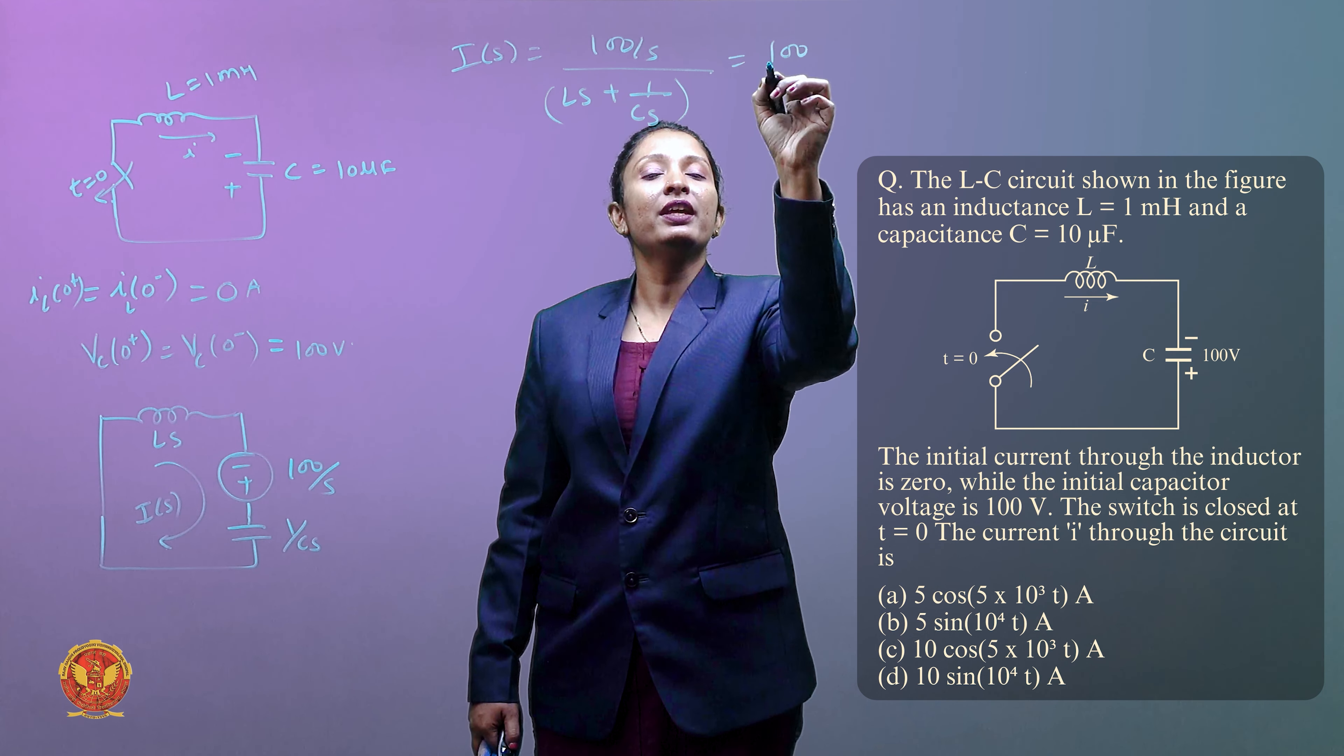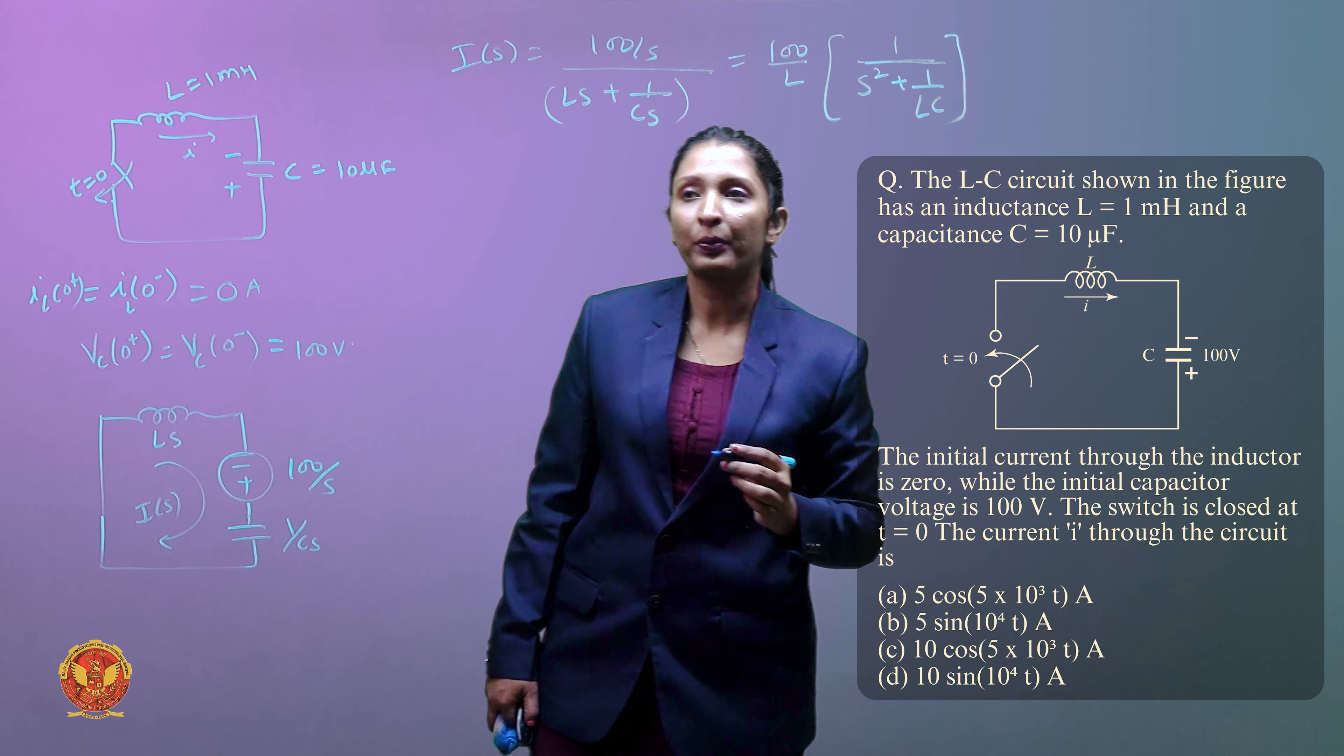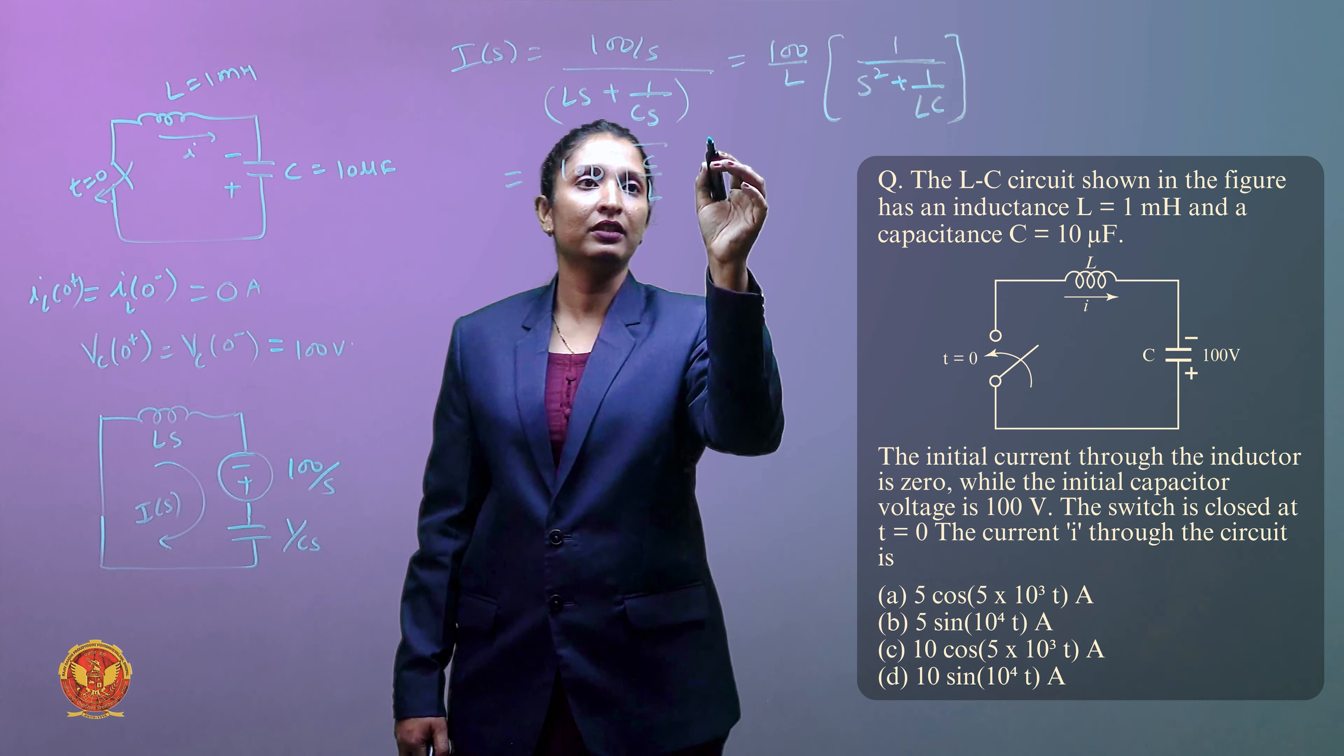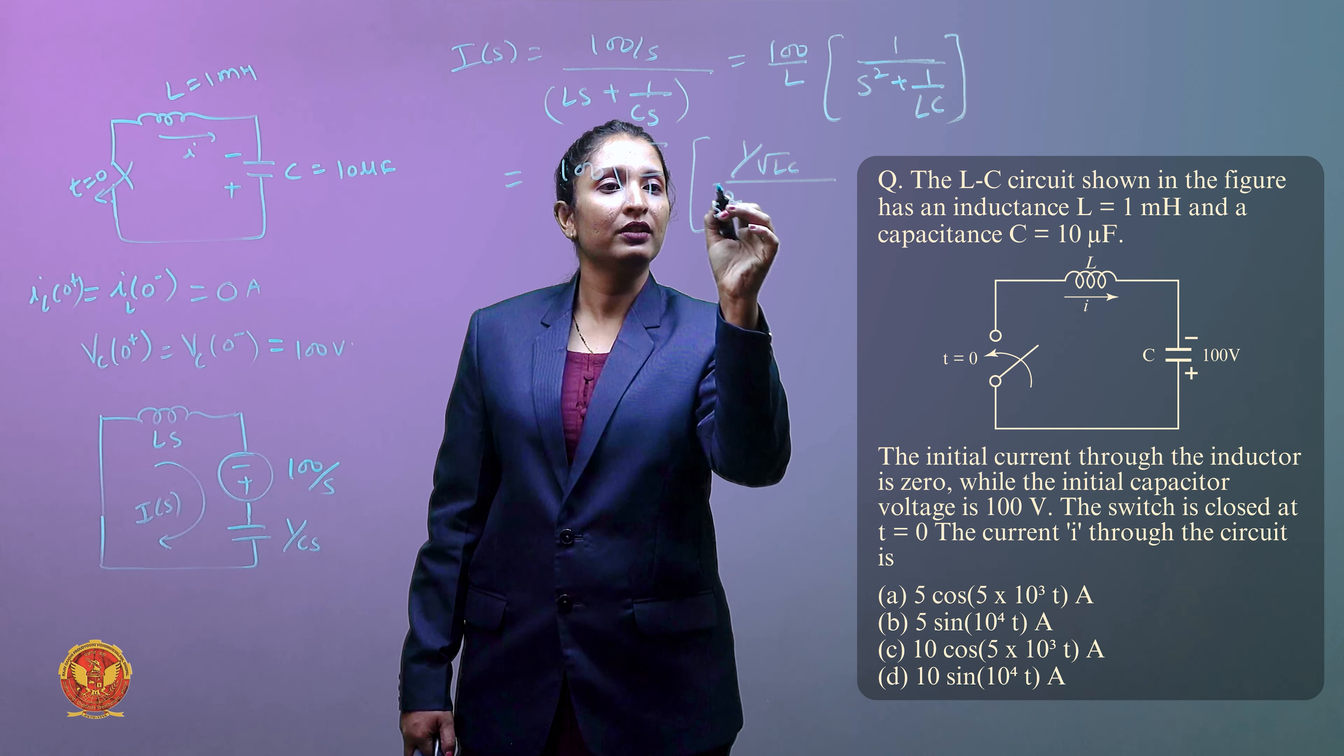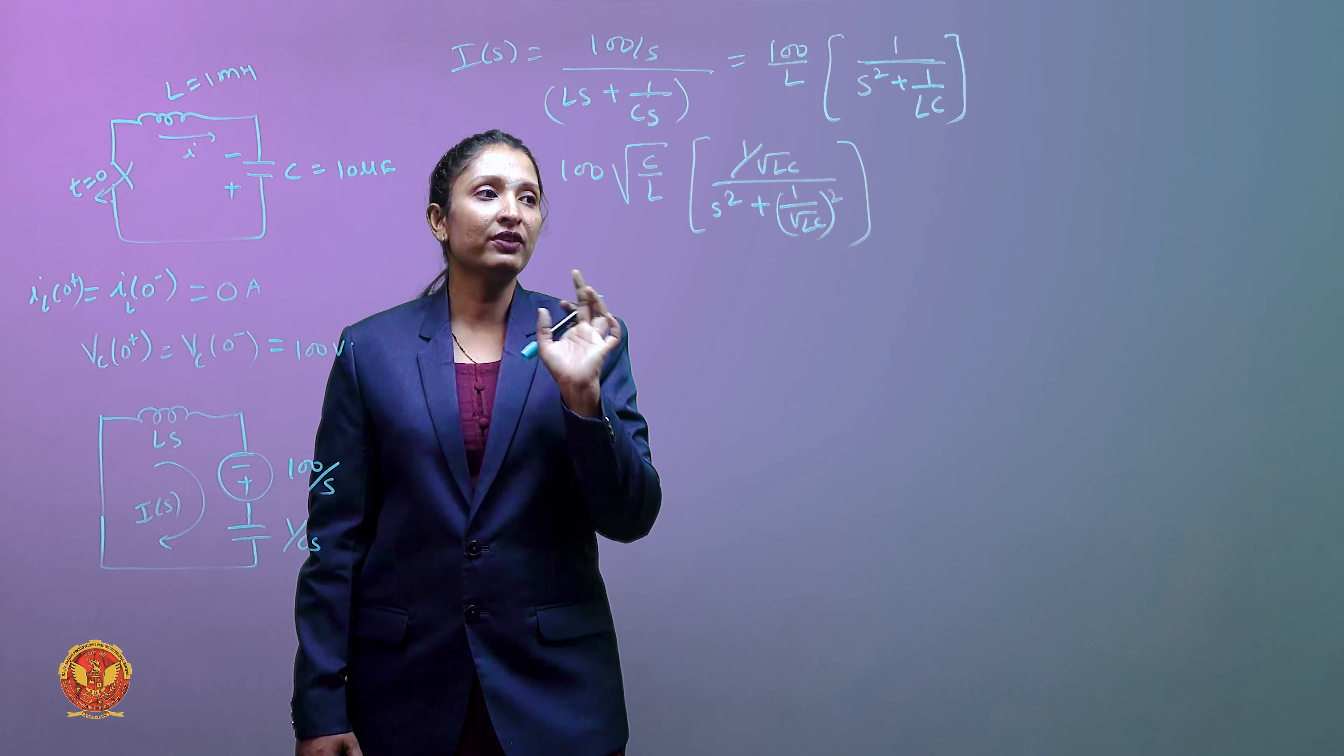This equals 100 upon L, 1 upon s square plus 1 by LC. We can write 100 under root C by L times 1 upon under root LC divided by s square plus 1 by under root LC whole square.